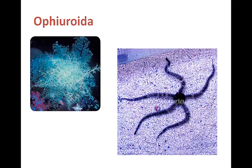Ophiuroidia — like the sea star, most brittle stars have five arms, but they are long, thin, and very flexible. We can see the difference in the limbs between sea stars and brittle stars. They don't have suckers on their tube feet, so they can't use them for movement the way asteroids do. Brittle stars move by working themselves quickly over bottom rocks and sediments or by snake-like movements of their arms. Some respond to light — the spherical structures covering their bodies might function as light-gathering lenses. These are the most abundant class of echinoderms.